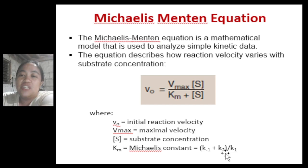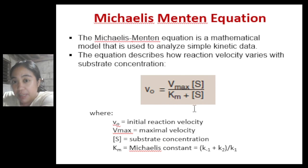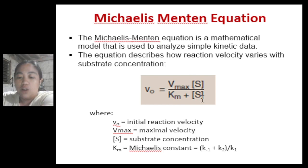Now we have the Michaelis-Menten equation, a mathematical model used to analyze simple kinetic data. The equation describes how reaction velocity varies with substrate concentration. You need to familiarize yourself with this equation. V-sub-O is the initial reaction velocity, Vmax is the maximal velocity, Km is the Michaelis constant, and [S] is the substrate concentration.